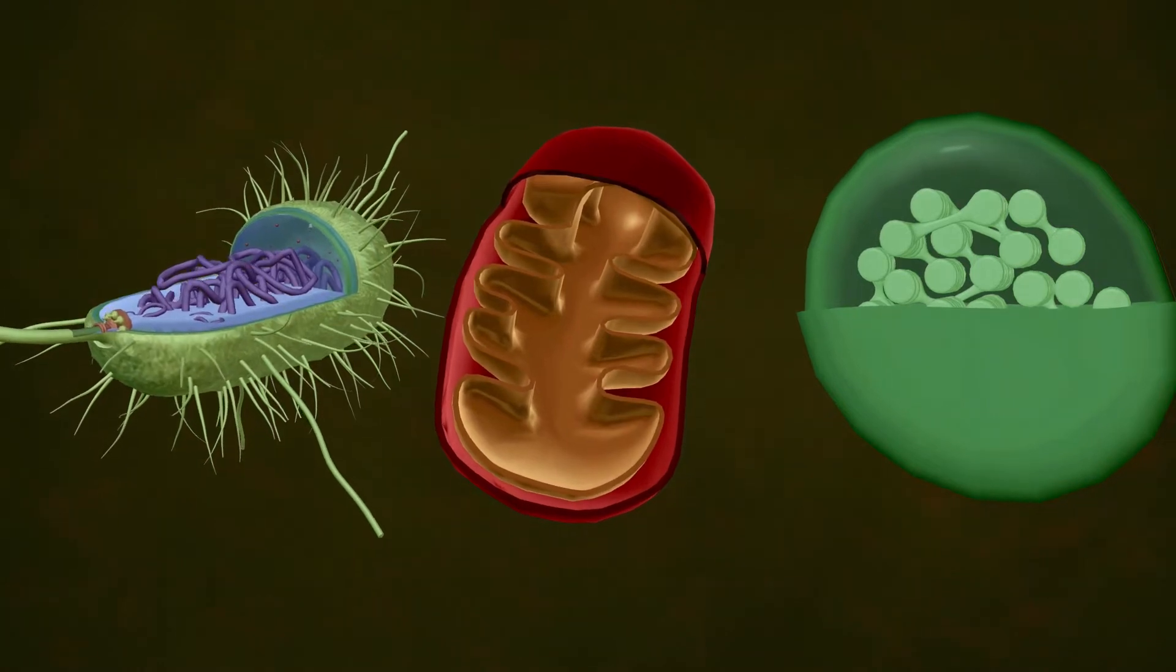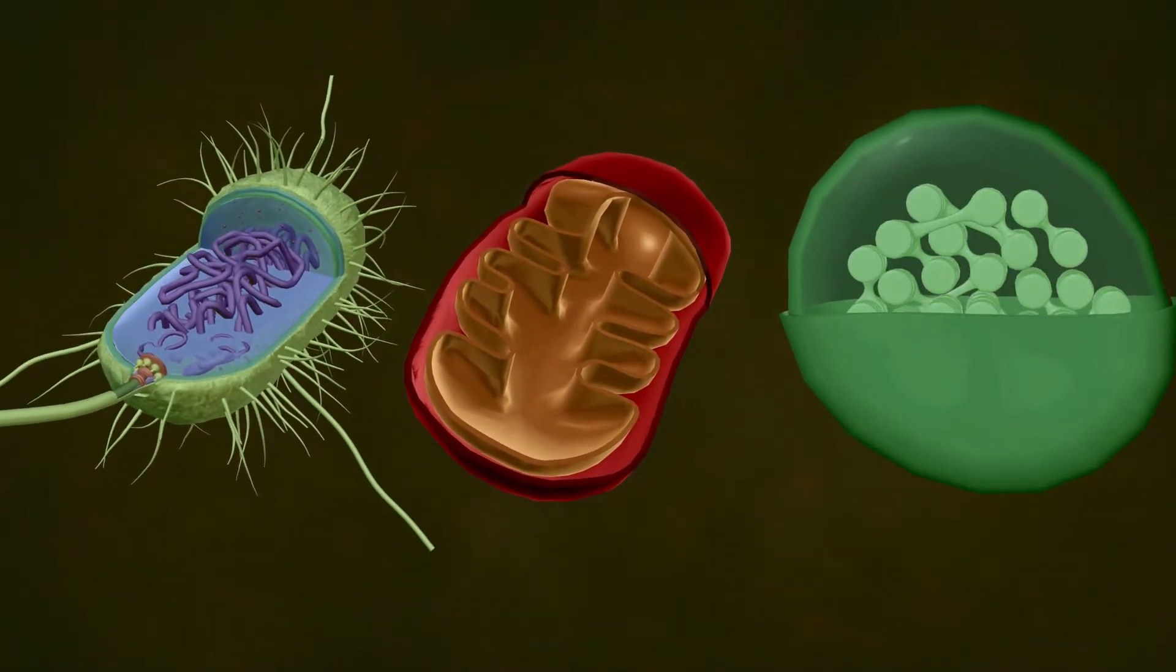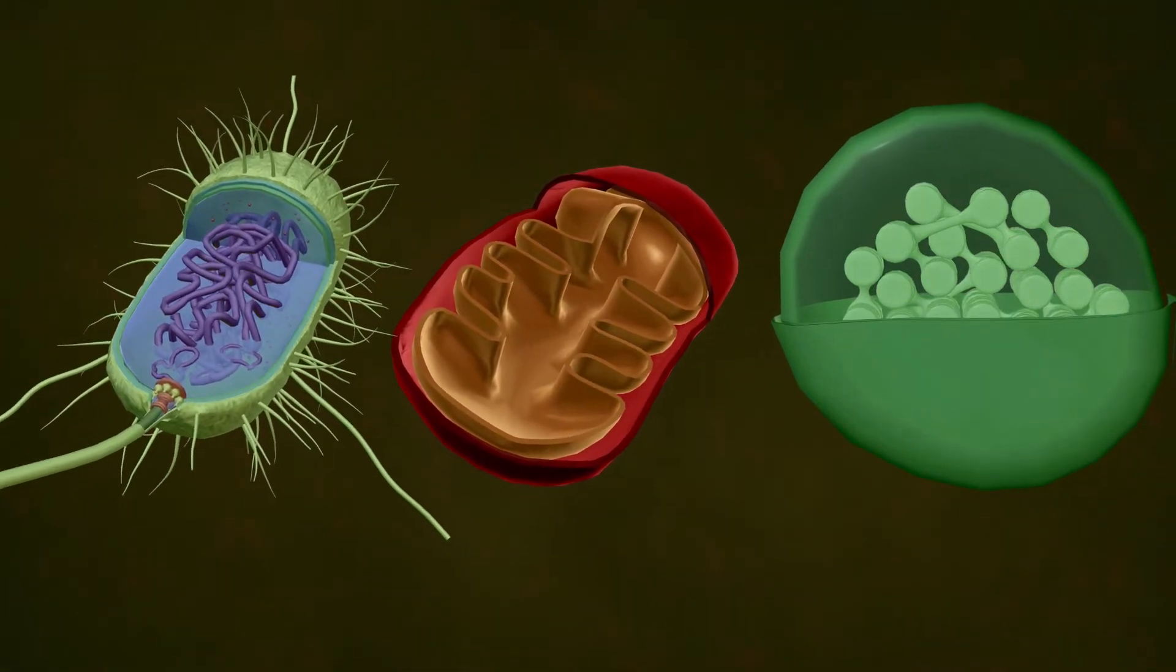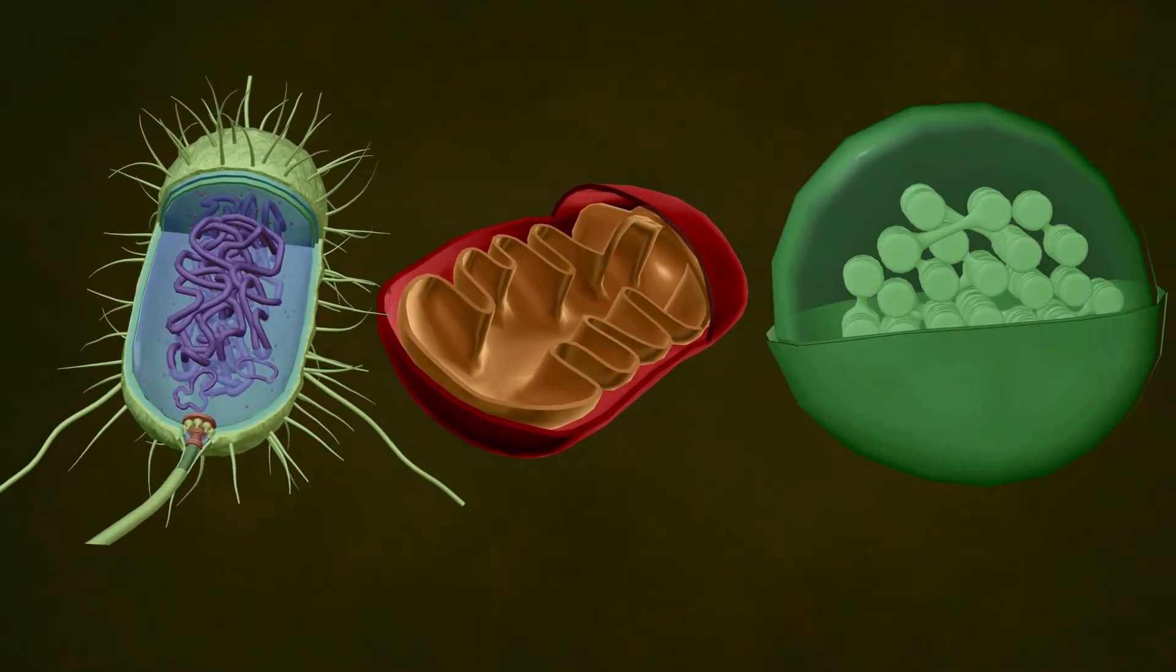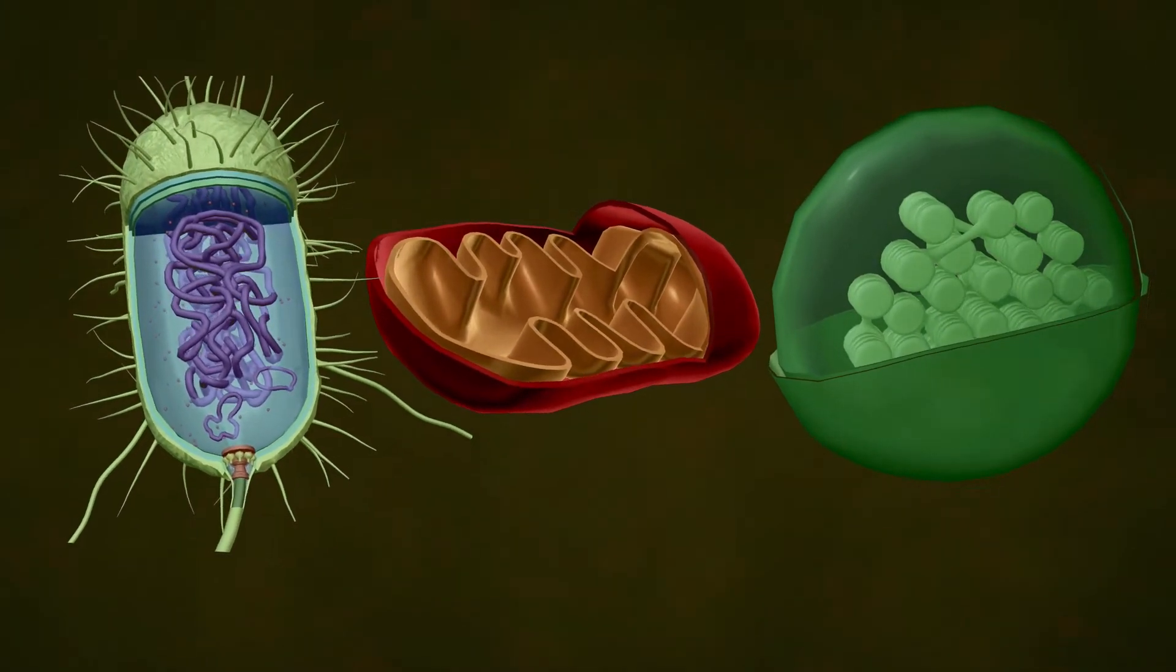If this is true, we would expect that chloroplasts and mitochondria have a similar structure to a bacterium, and they do. They have circular DNA plasmids, their own ribosomes, they divide like bacteria, and their genes look like bacterial genes.